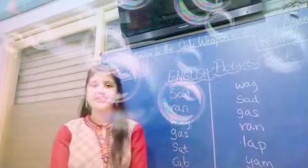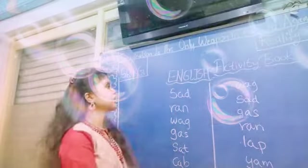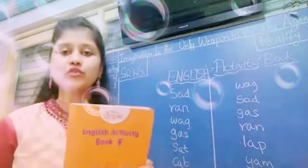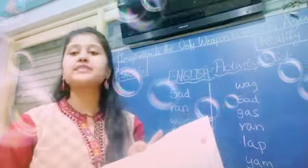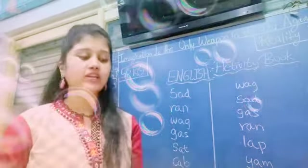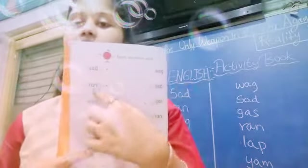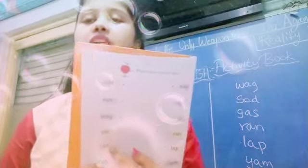Good morning children, how are you? Today we will do it in our English activity book. Everyone remove your English activity book. That is page number 8. So what is given over here? Match the correct word. Here you have three letter words. You have to match these three letter words correctly.